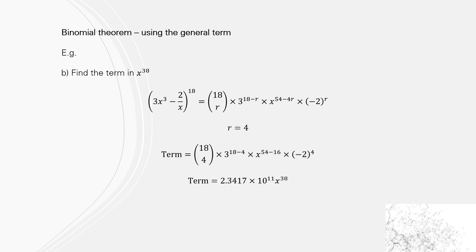Replacing r with 4, you get 18C4 times 3^(18-4) times x^(54-16), which does actually equal x^38, which is what we're trying to find, times (-2)^4. And if you times all that out, it's too big on your calculator, but it's 2.3417 × 10^11 x^38. Thank you.